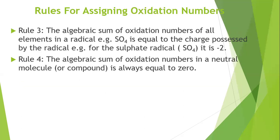Rule three: the algebraic sum of the oxidation numbers of all elements in a radical — for example SO4 — is equal to the charge possessed by that radical. For example, the sulfate radical SO4 has a charge of minus two. So the algebraic sum of the oxidation numbers of elements in a radical equals the charge on that radical.